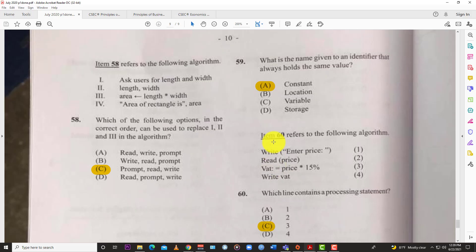Question 59: Which is the name given to an identifier that always holds the same value? Like in maths, right? Yes, we need maths to be able to think logically and become a good programmer. A, constant. It's constant, it's the same. Constant.